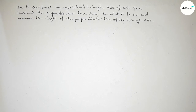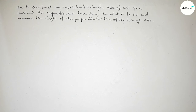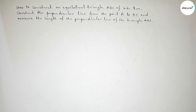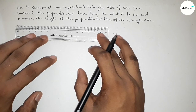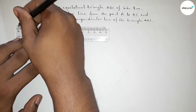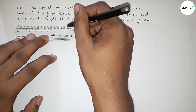Hi everyone, welcome to Syshare Classes. Today in this video we have to construct an equilateral triangle of each side 8 centimeter, construct a perpendicular line from the point A to BC, and measure the length of the perpendicular line. So let's start the video. First of all, drawing here a line of length 8 centimeter.